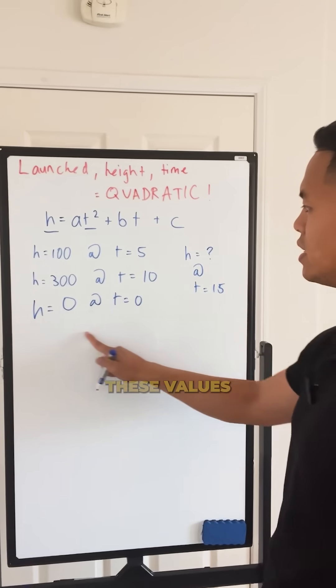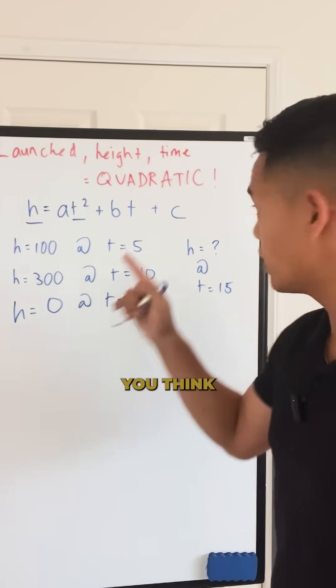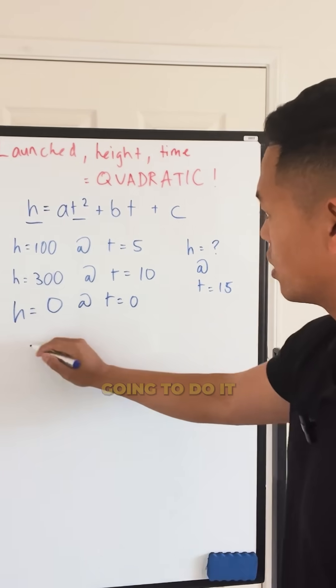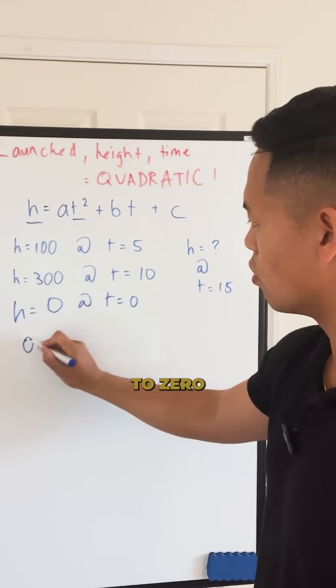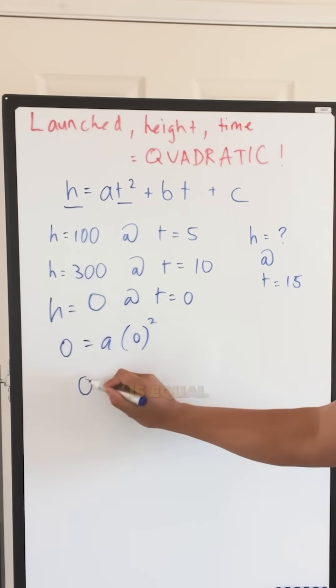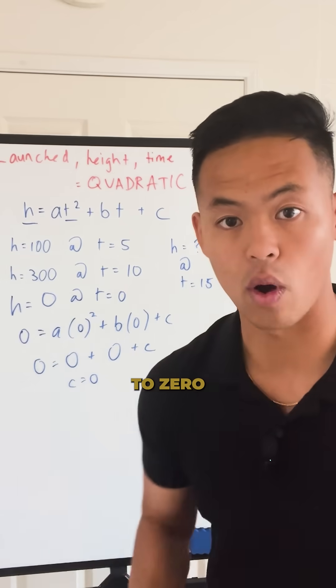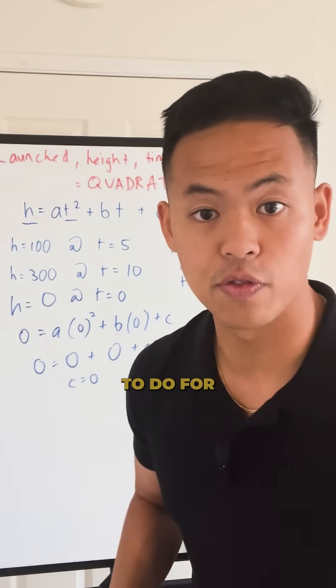Now we can plug these values into this equation and solve for one of our constants. Which one? It's C. Here's why: when H equals zero and time equals zero, we plug in zero for T, so zero equals zero. That means C equals zero. That's the first step for this problem.